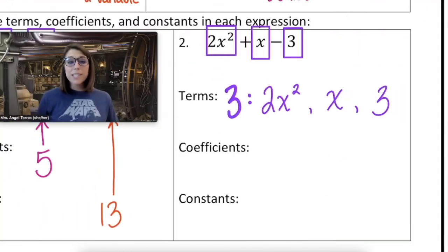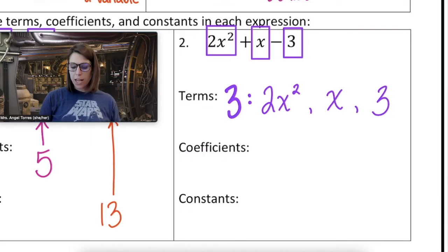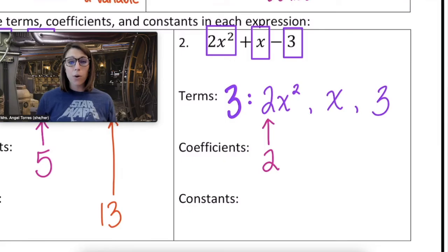In our second expression, there are three terms, 2x squared, x, and three. In our first variable term, 2 is attached to x squared, meaning 2 is a coefficient.